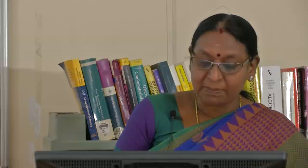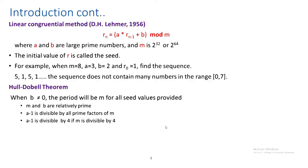The Hull-Dobal conditions are: m and b are relatively prime; a − 1 is divisible by all prime factors of m; and a − 1 is divisible by 4 if m is divisible by 4. If you choose the parameters properly, this algorithm will generate all integers in the range 0 to m following a uniform distribution.